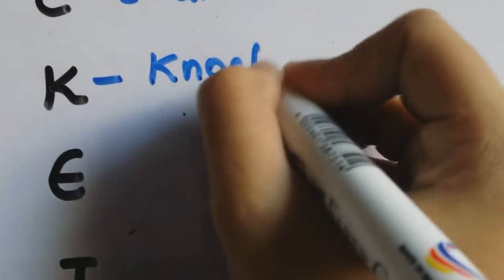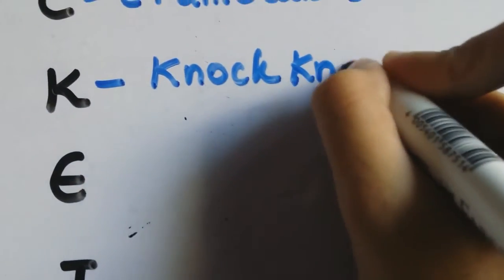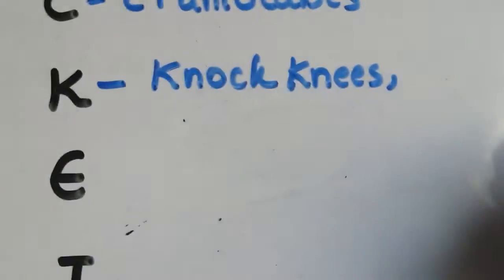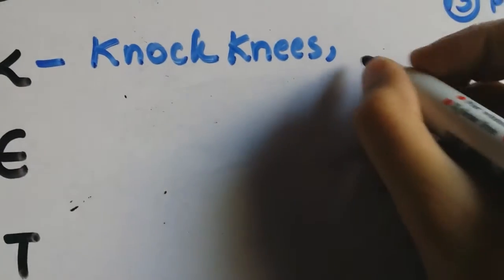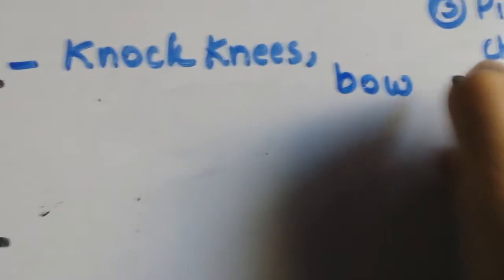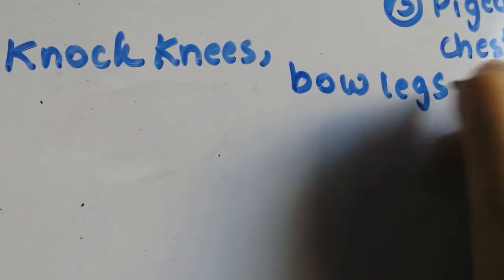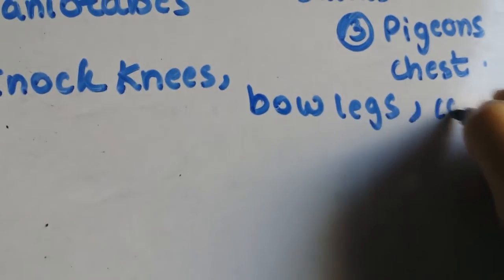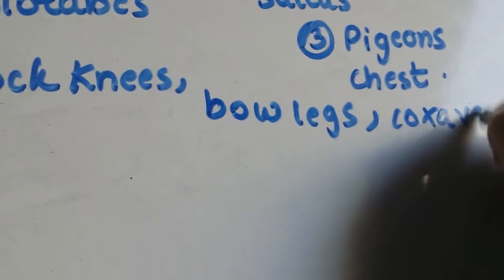K is for knock knees and while you are writing knock knees we are going to talk about other leg manifestations in Rickets as well. There is bow legs and coxa vara deformities occur in Rickets.